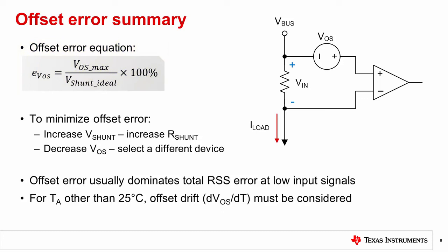Number three, to minimize offset error, you can either increase V shunt by increasing R shunt, or decrease VOS by selecting a different device. Number four, offset error usually dominates total RSS error at low input signals, since VOS can become large compared to low input voltages.